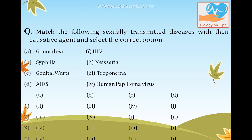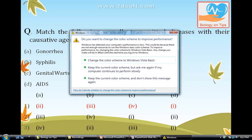Match the sexually transmitted diseases with their causative agents. Gonorrhea is caused by Neisseria gonorrhoeae. Syphilis is caused by Treponema pallidum — both are bacterial diseases. Genital warts are caused by a virus. HIV — human immunodeficiency virus — causes AIDS. So gonorrhea and syphilis are bacterial infections, while genital warts and AIDS are caused by viruses.